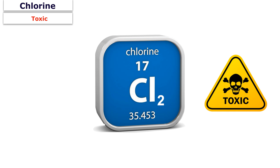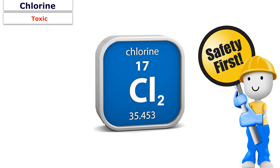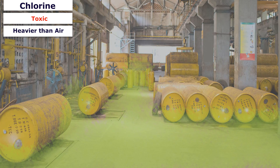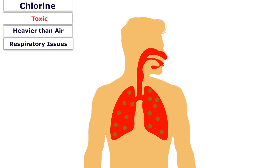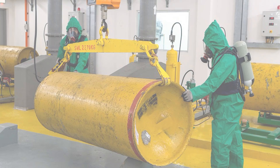Chlorine is not a flammable gas, but it is a highly toxic chemical and must be handled with care. Chlorine gas is heavier than air and settles to the ground. It can also irritate the respiratory system, and high doses of chlorine gas can cause death rapidly.